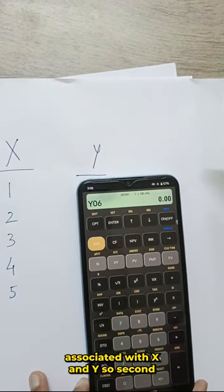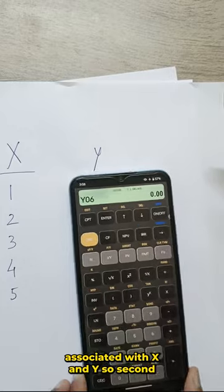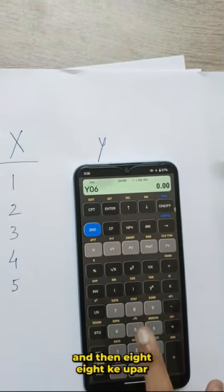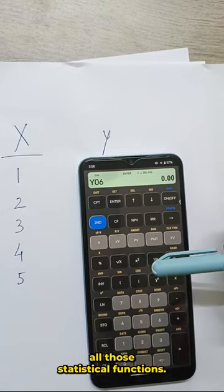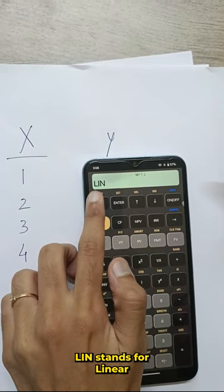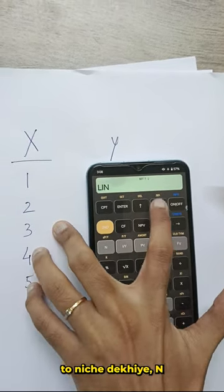Now, we will see the linear functions associated with x and y. 2nd and then 8. We can see stat. We will get all the statistical functions. L, I, N stands for linear.